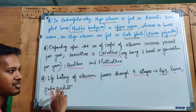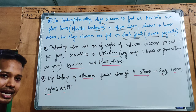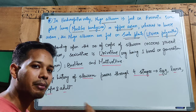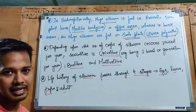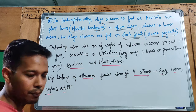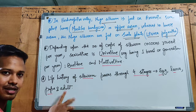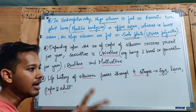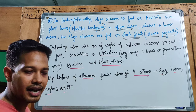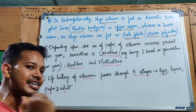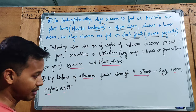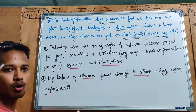Life history of the silkworm passes through four stages: egg, larva, pupa, and adult. We will now start the life cycle and understand how silk is made. We will read it from the rearing aspect, starting with the adult — how a male and female pair progresses through the life cycle and how cocoon formation occurs.